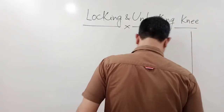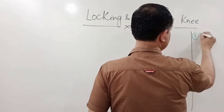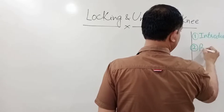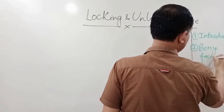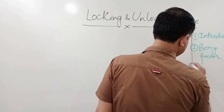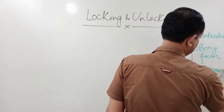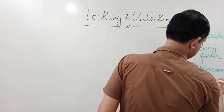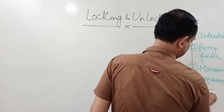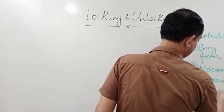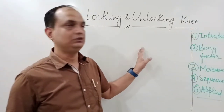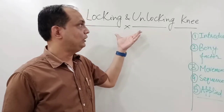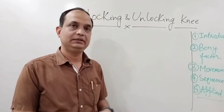When you are writing this question, it should be under the following headings. First, introduction. Second, what are the bony factors which are responsible for the locking and unlocking of the knee joint. Third, we will discuss the types of movements which are taking place during locking and unlocking. Then we will see the sequence of the movements, and lastly, clinical or applied anatomy related to this topic.